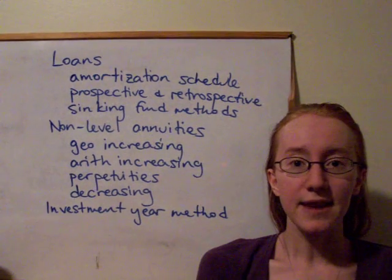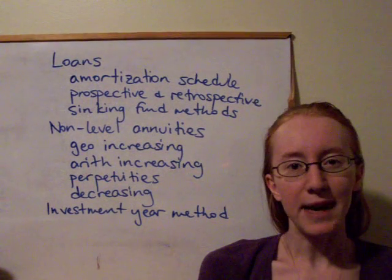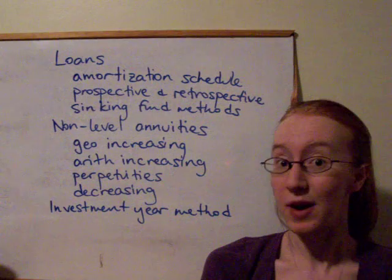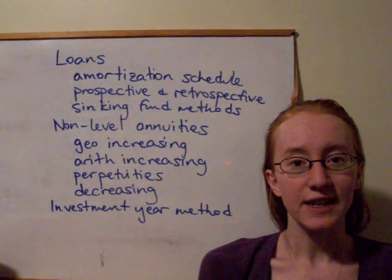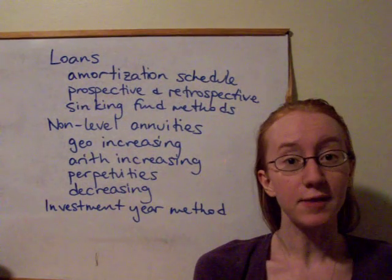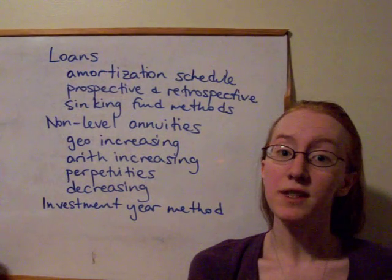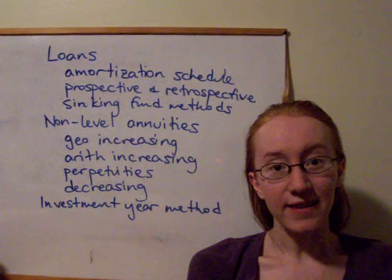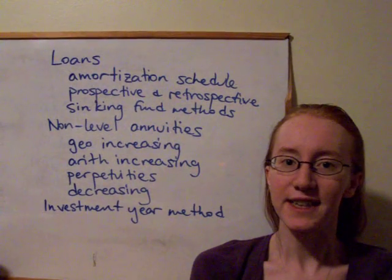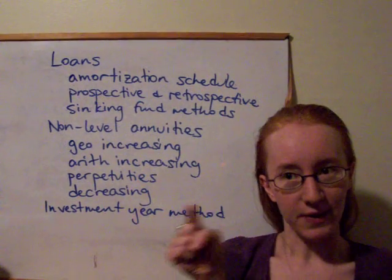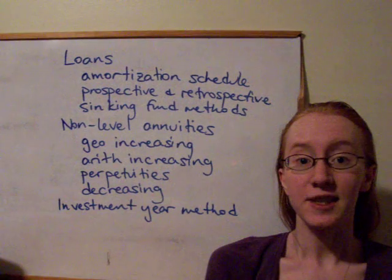The last thing we looked at was the investment year method, which is just a way to get a more complex look at how interest rates might behave. A bank might have a promotion that rewards people for staying invested for a long time or offers bonus interest to new customers. The investment year method has select rates, which depend both on the initial year of investment and how long the money has been in that account, and then ultimate rates, which after a certain point apply to everyone in that calendar year regardless of how long their money has been invested. To use a select and ultimate interest rate table, we always go across the row until we get to the end, and then down the column when looking at how much interest is earned in each succeeding calendar year.